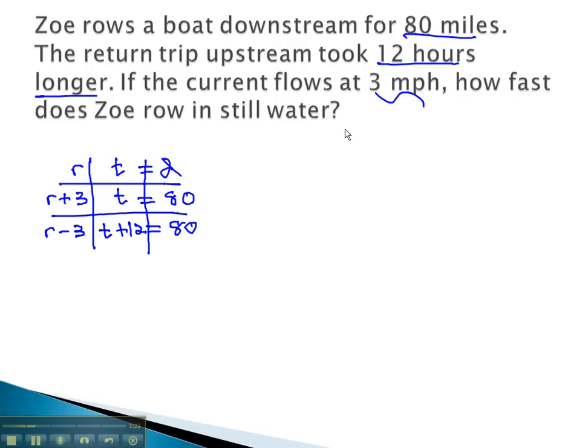Looking at this, we can see our simultaneous product that we will want to solve: r plus 3 times the time equals 80, and r minus 3 times the time plus 12 equals 80 as well.